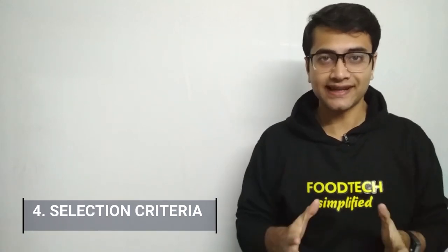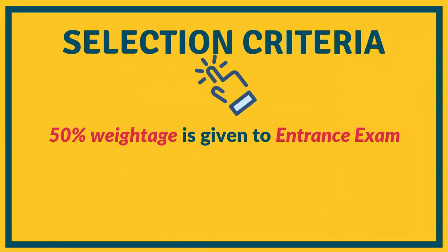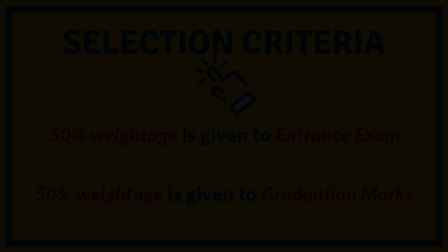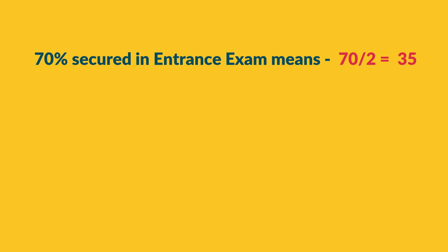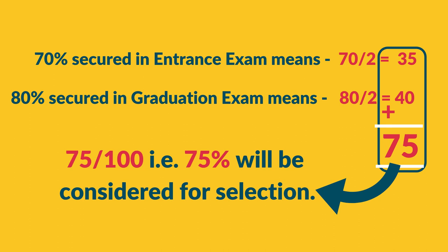Now let us talk about the selection criteria, how do you get selected. There are two things to remember. First, 50 percent weightage is given to the marks secured in the entrance exam and 50 percent weightage to the marks you achieved in your graduation. That means if you scored 70 marks in your entrance exam, that will be divided by 2, which is 35 out of 50. If you got 80 percent in your graduation exams, that will be divided by 2, which is 40 out of 50. So 40 added with 35 gives you 75. Your final marks will be 75 out of 100, and that will be considered for the admission process.